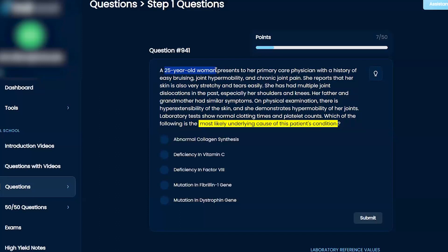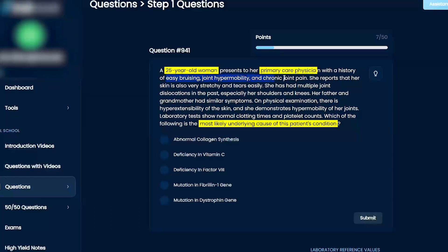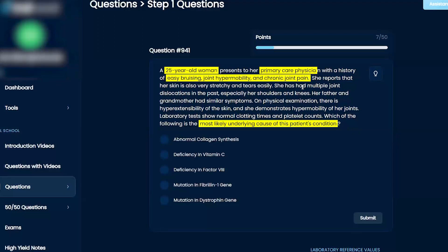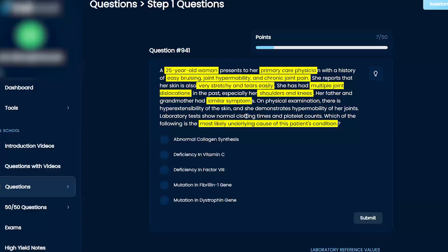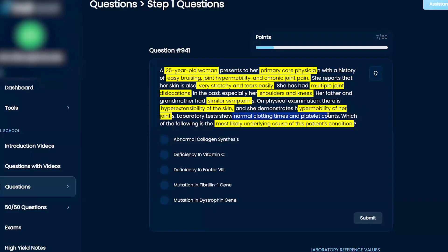It's a 25-year-old woman presenting to her primary care physician with a history of easy bruising, joint hypermobility, and chronic joint pain. Her skin is also very stretchy and tears easily. She's had multiple joint dislocations in the past, especially her shoulders and knees. Her father and grandmother have the skin, and she demonstrates hypermobility of her joints. Lab studies show normal clotting time and platelet counts.